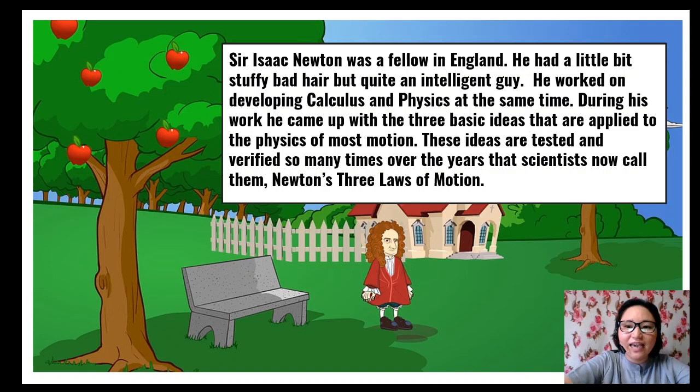Sir Isaac Newton was a fellow in England. He had a little bit stuffy bad hair, but quite an intelligent guy. He worked on developing calculus and physics at the same time. During his work, he came up with the three basic ideas that are applied to the physics of most motion. These ideas are tested and verified so many times over the years. Scientists now call them Newton's Three Laws of Motion.